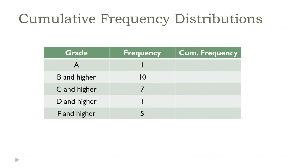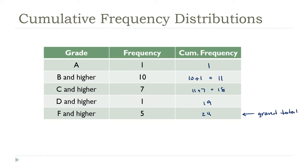The second new kind we're going to talk about is called a cumulative frequency distribution. In this type, the value for each class is the sum of that class and all the classes that came before it. So the A class is still just 1, but the B-and-higher class includes B's and A's, which is 11. The C class will be 11 plus 7, which is 18. Then 18 plus 1 is 19, and 19 plus 5 is 24. With a cumulative distribution, this last class should equal the grand total — and as we saw, there were 24 grades in our data set.